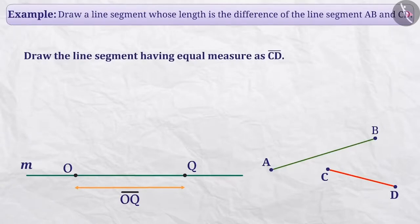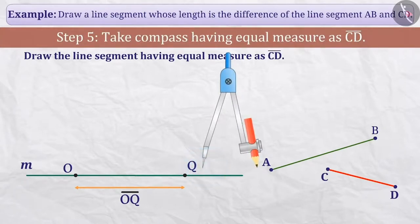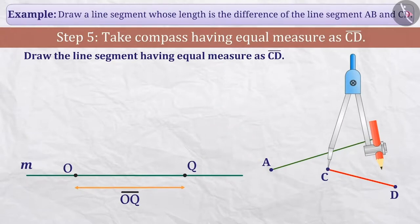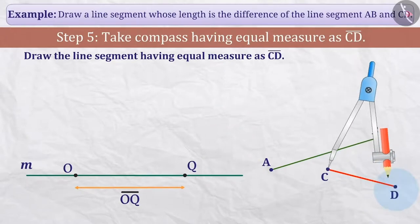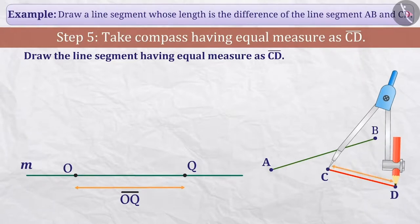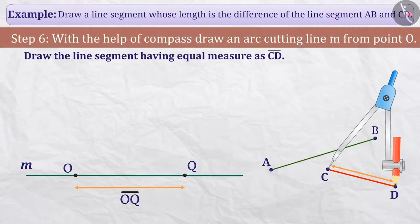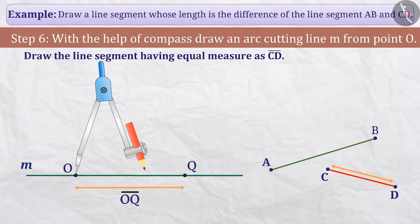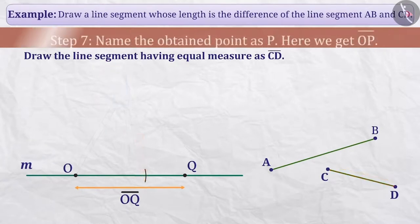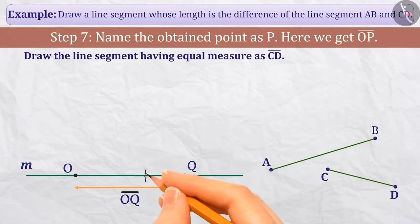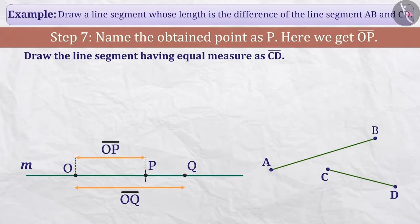Now we will draw a line segment of equal length to line segment CD. Step 5: We will place the pointed end of the compass on point C and stretching the compass, place the end with the pencil on point D — that is, we will take the equal distance of line segment CD in the ends of the compass. Step 6: Without changing the measure of the compass, we will place its pointed end on point O on the line and make an arc cutting line M. Step 7: The point at which the arc intersects line M will be named point P. Here we get line segment OP, the length of which is equal to the given line segment CD.